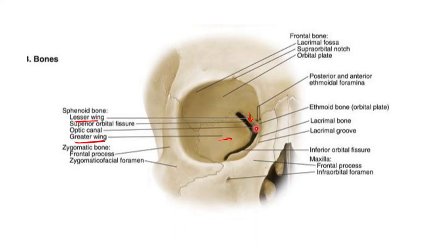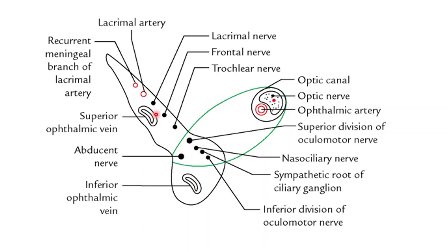Along the lesser wing of the sphenoid, there is a small tubercle along its medial side. The lesser wing of the sphenoid towards its medial end represents a small tubercle to which is the attachment of the common tendinous ring. This common tendinous ring divides the superior orbital fissure into three compartments: the superolateral compartment, the middle or intermediate compartment, and the inferomedial compartment.